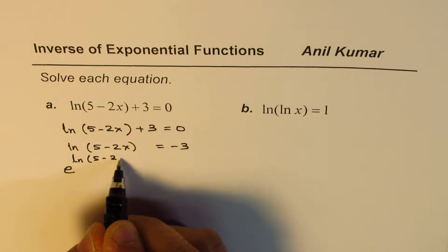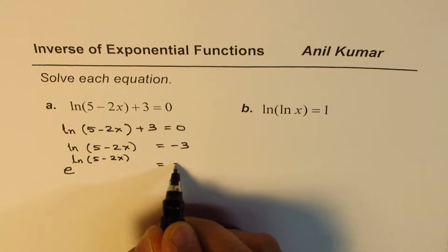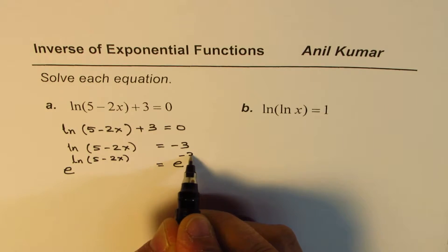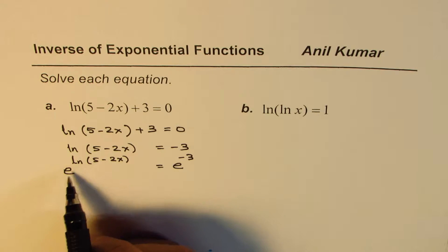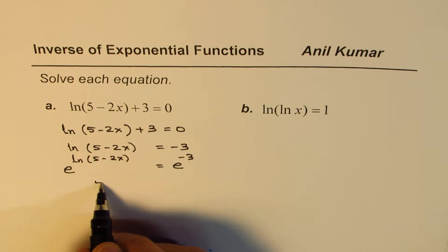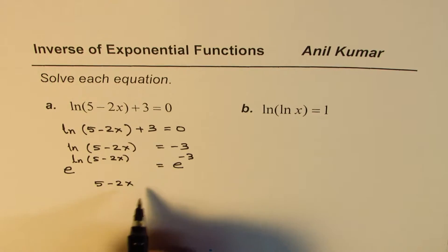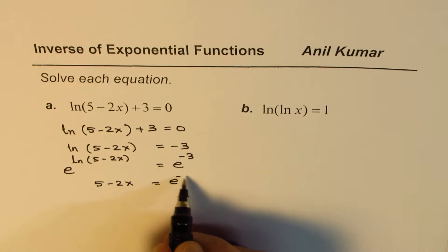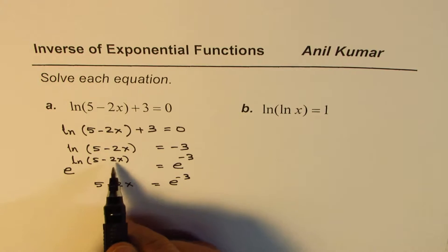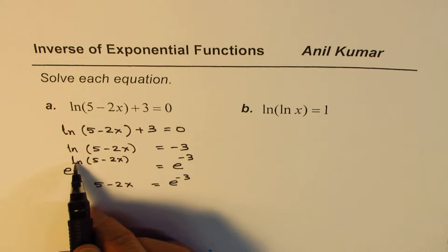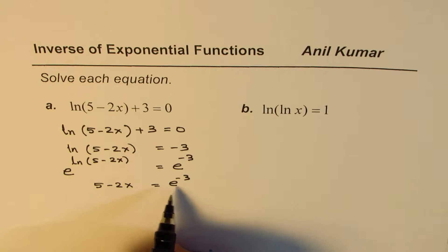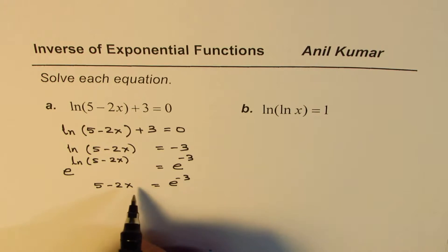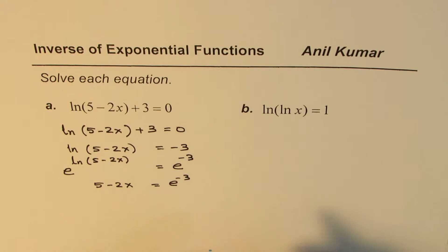Since ln is the inverse of e, what we get is 5 minus 2x equals e to the power of minus 3. That's because e to the power of ln(x) equals x. So we get 5 minus 2x equals e to the power of minus 3.